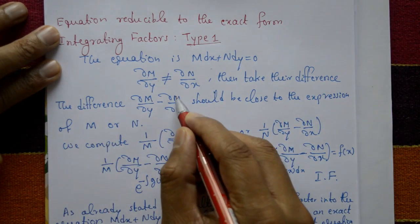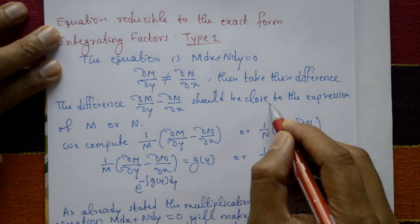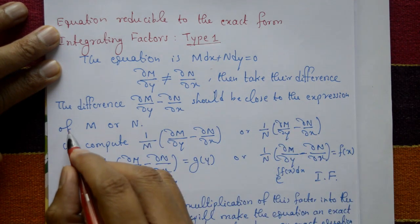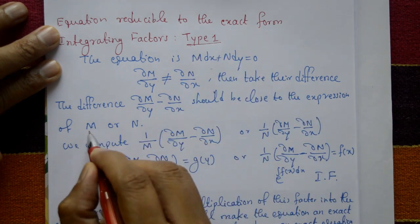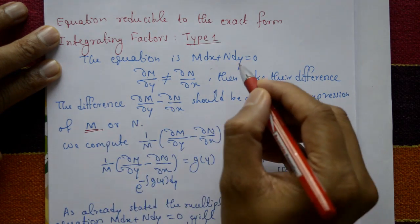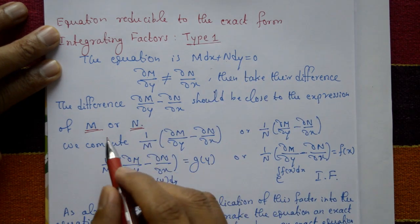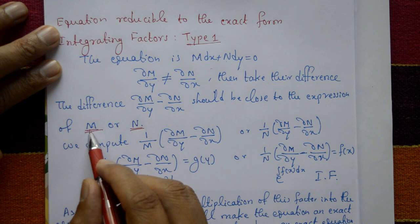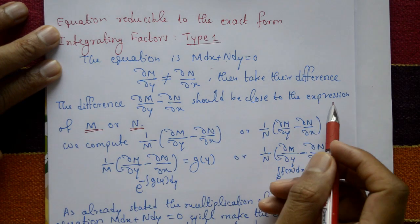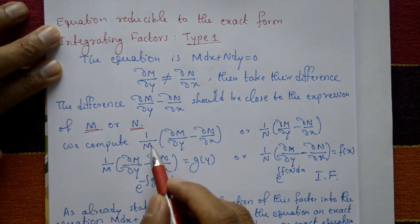This should be close to expressions of M or N. Suppose the difference is close to M, the difference expression is close to M, so take 1/M into (∂M/∂y minus ∂N/∂x).